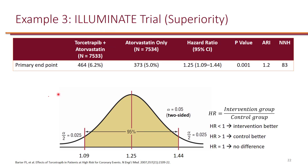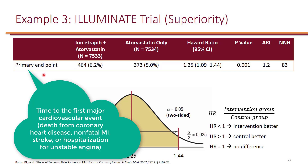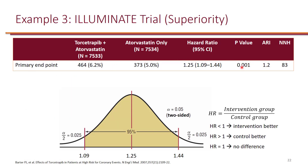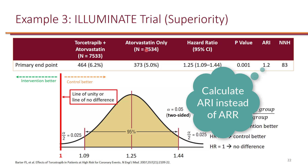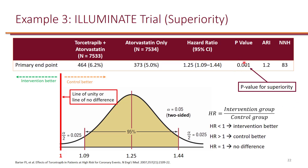The ILLUMINATE trial's primary endpoint was time to first major cardiovascular event, defined as death from coronary heart disease, non-fatal MI, stroke, or hospitalization for unstable angina. The p-value was statistically significant and the hazard ratio was 1.25 — the point estimate — with a confidence interval of 1.09 to 1.44. The confidence interval does not include one, but it's on the right side of one, meaning results favor the control group — the intervention is actually inferior to the control group.